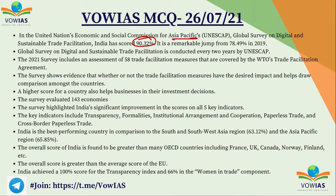This is a remarkable jump for India because in the 2019 survey, India scored only 78.49%. This Global Survey on Digital and Sustainable Trade Facilitation is conducted once every two years by UNESCAP. The 2021 survey includes an assessment of 58 trade facilitation measures covered by the WTO Trade Facilitation Agreement. A higher score helps businesses make good investment decisions. The survey evaluated 143 economies based on five key indicators.